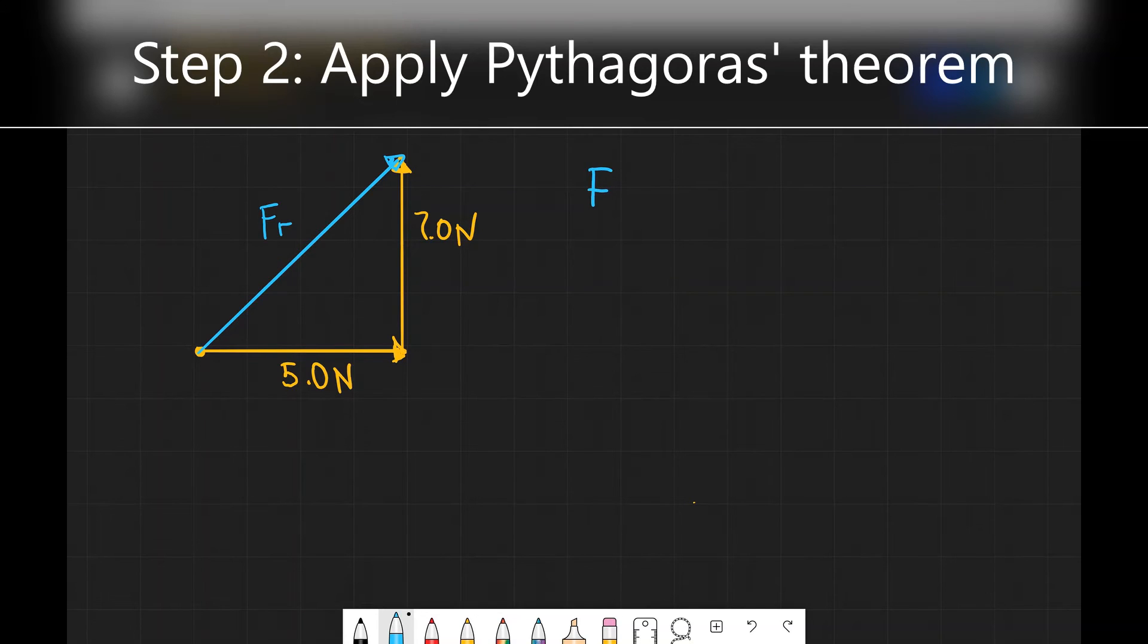Well the resultant velocity, remember Pythagoras' theorem says that the hypotenuse squared, which in this case this blue vector is the hypotenuse, is going to be the sum of the squares of the sides of the triangle. There's going to be 7.0 squared plus 5.0 squared as well. That means that my resultant force will in fact be the square root of 7.0 squared plus 5.0 squared. And if we put that number into a scientific calculator we're going to get 8.6 newtons. So this is the magnitude of our resultant force.